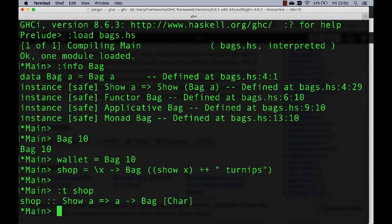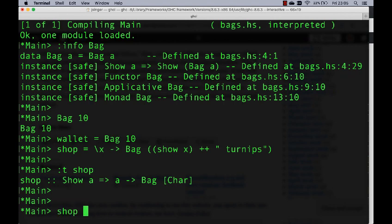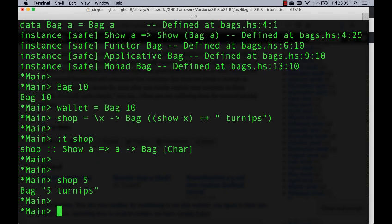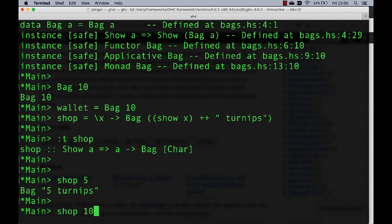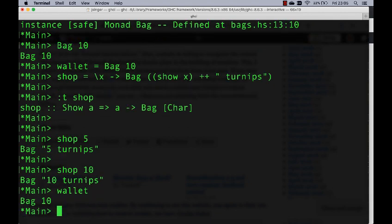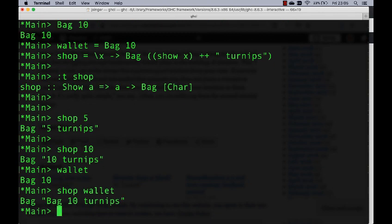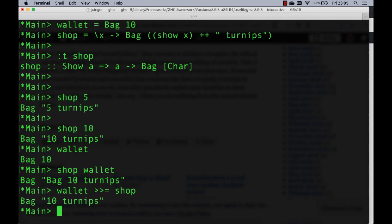There's the type of shop. So given that a can be shown, then we take an a and return a bag of a string, a character list. So now what we can do is we can shop with five coins and get back a bag with five turnips. Or we can shop with 10 coins and get back a bag with 10 turnips. Or look at our wallet. Well, it's got 10 things in it. We can't shop with our wallet. Oh dear. Well, we can. We get back a bag with a bag with 10 turnips in it. That's no good, is it?